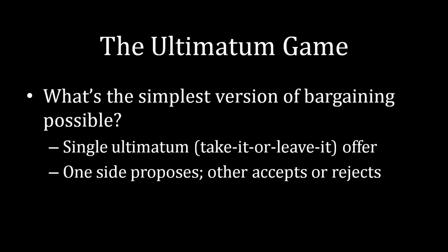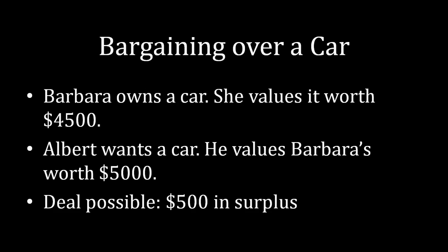When we actually start analyzing and solving this model, we're going to be talking about bargaining over a car. Imagine that Barbara owns a car and values it at $4,500, but she's willing to sell it. Meanwhile, Albert wants a car and is willing to pay up to $5,000 for Barbara's vehicle. In an ultimatum game, Albert will make a single take-it-or-leave-it offer to Barbara — he'll say he'd like to buy the vehicle for X dollars.